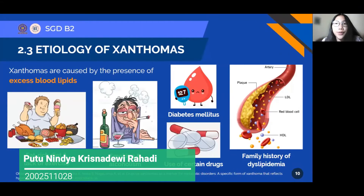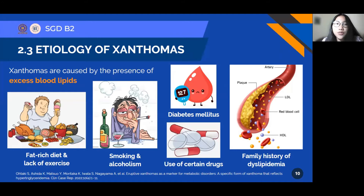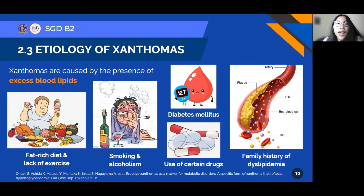My name is Putunidakrishadi Widahadi, with the last three digits of my student ID number being 028. I would like to present about the etiology of Xanthomas. Xanthomas are caused by the presence of excess blood lipids such as cholesterol and triglycerides in the body. Excess lipids may accumulate beneath the skin and manifest as Xanthomas. The presence of Xanthomas can point to serious underlying metabolic, cardiovascular, and lipoprotein disorders. Xanthomas are associated with hyperlipidemia, specifically elevated LDL, triglycerides, and/or cholesterol.